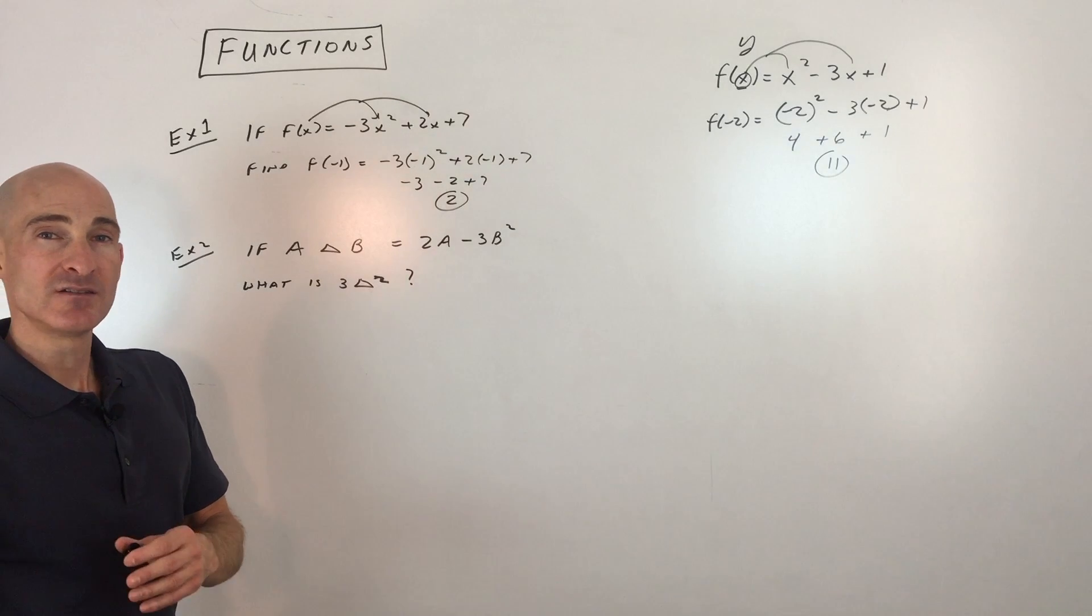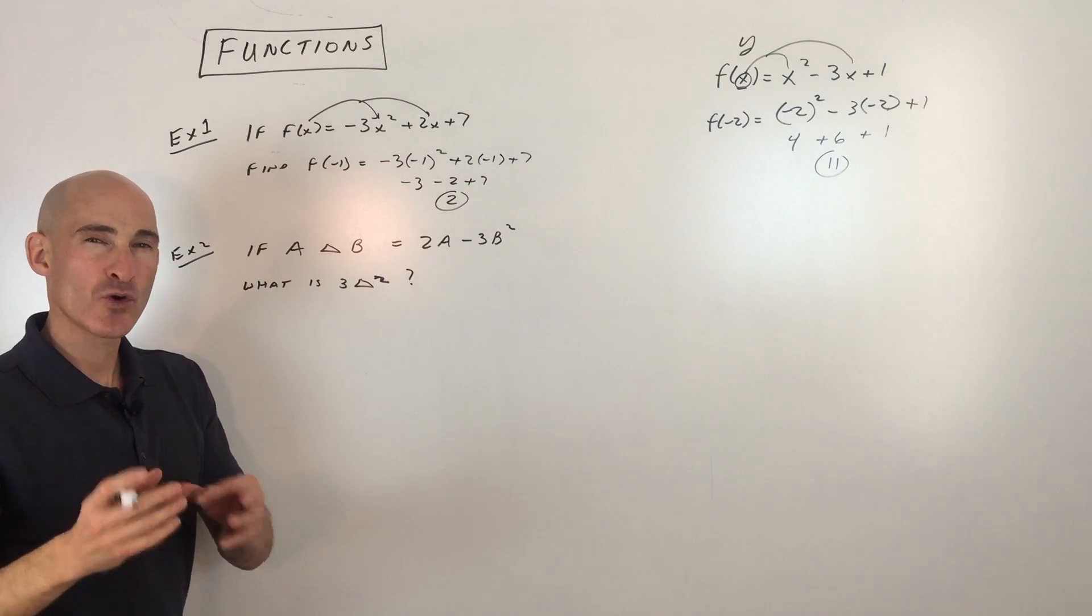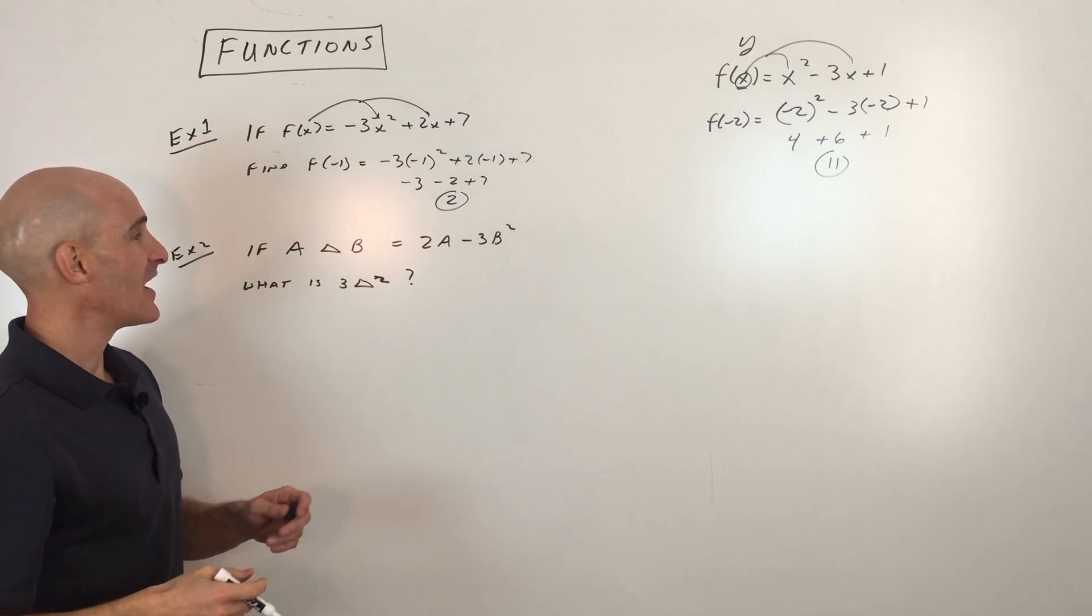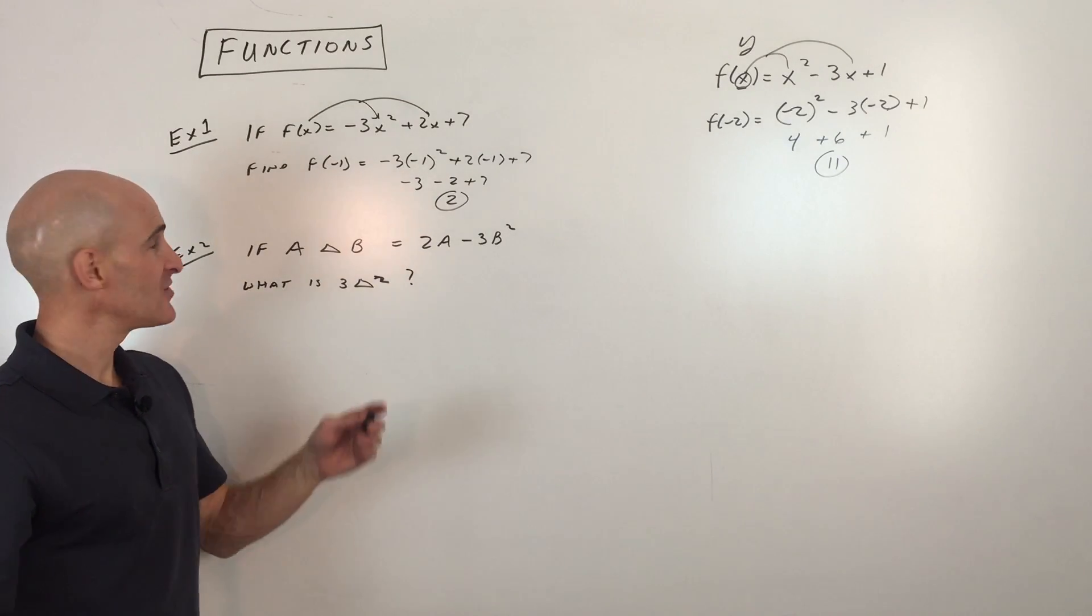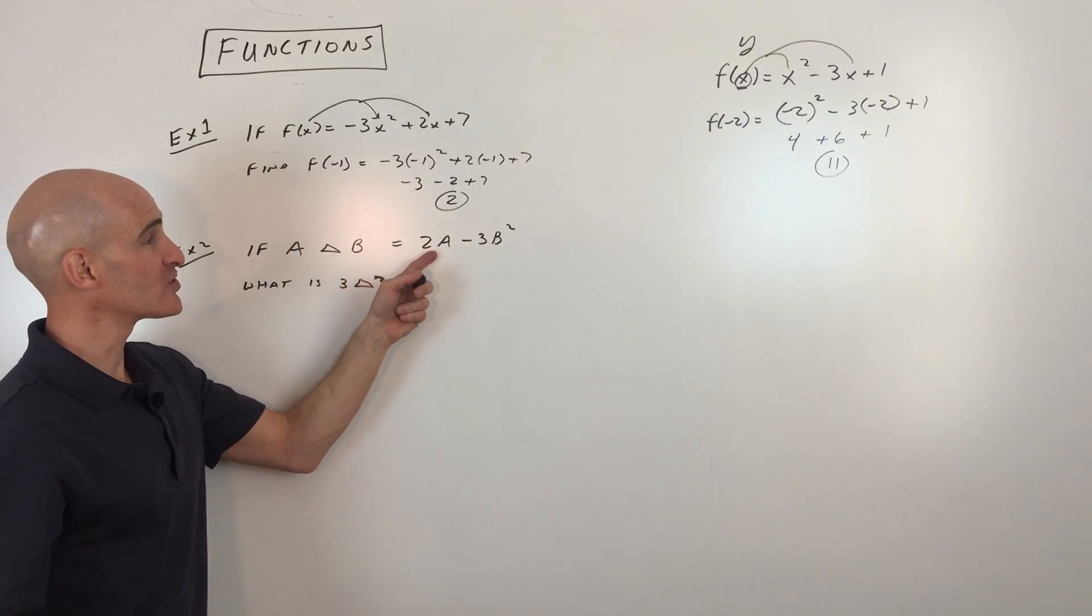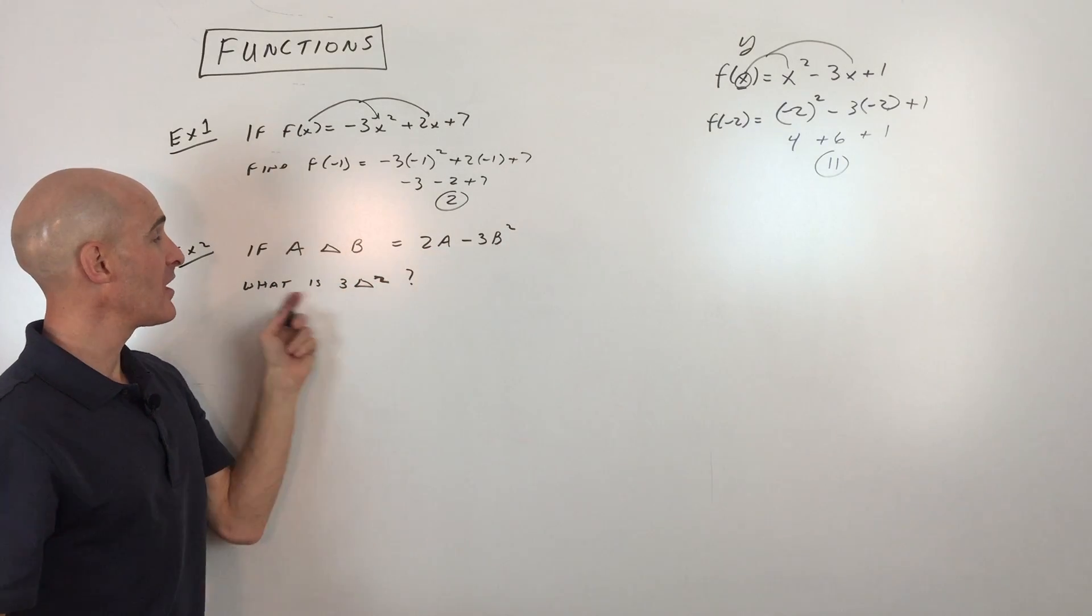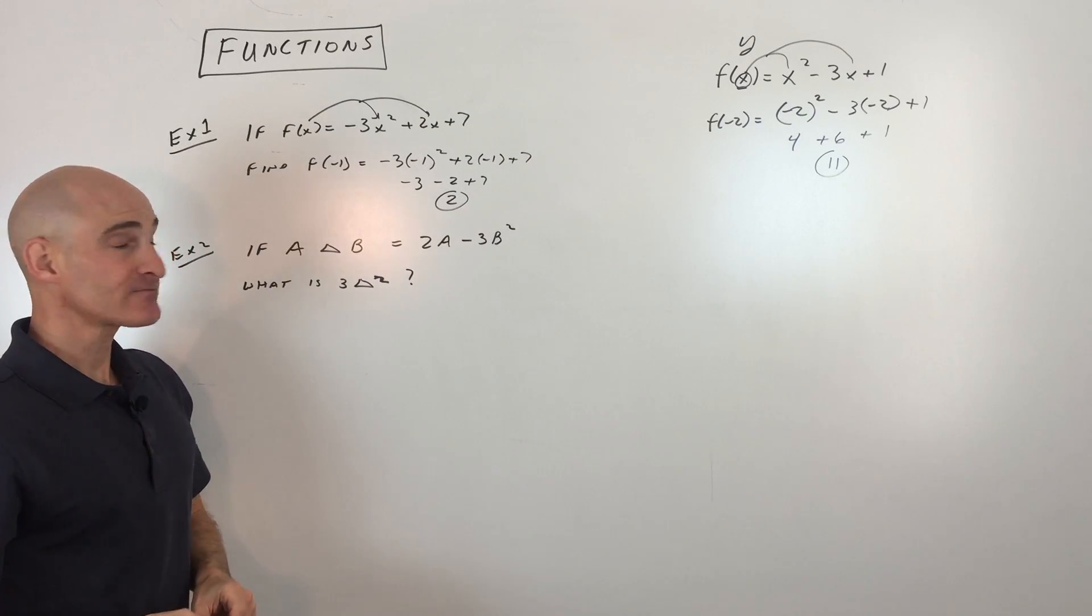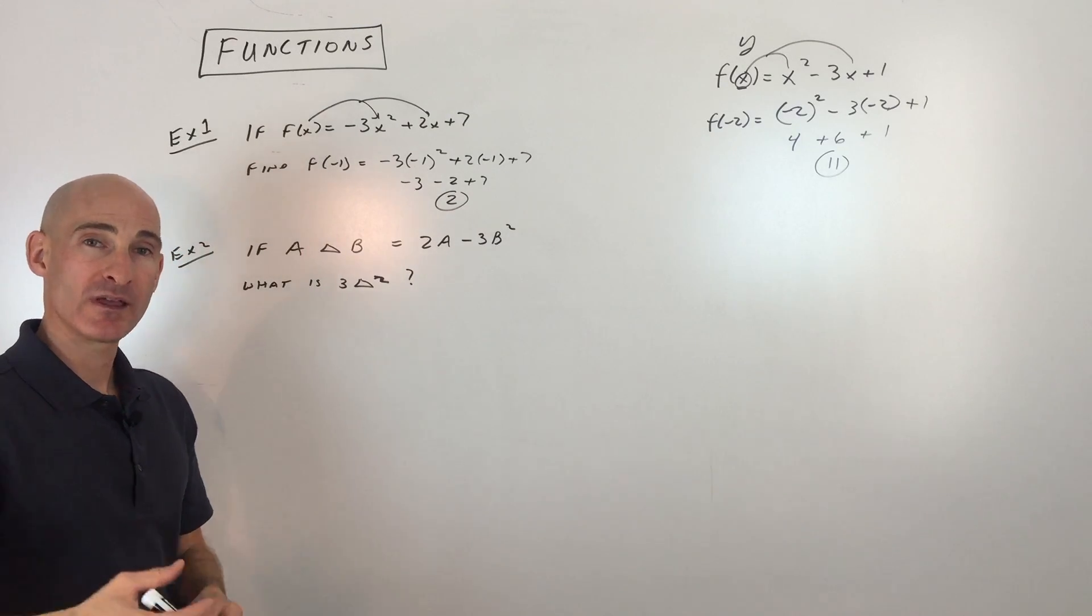Now this next example, see if you can get this one on your own. Sometimes they throw this little variation on the function concept. But it's basically the same idea. So see if you can get this one. If a triangle b equals 2a minus 3b squared, what is 3 triangle 2 equal? Okay, so go ahead and pause the video, and we'll do it together.